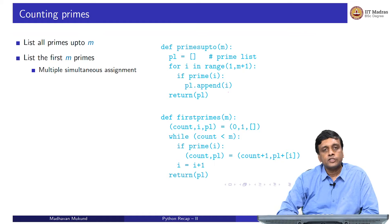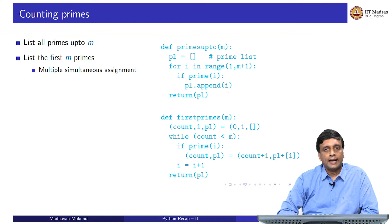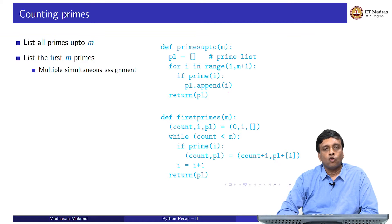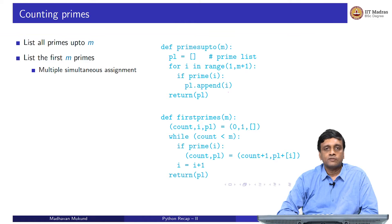Supposing we do not want the list of primes up to a given number m, but we want the first m primes. Primes are infinite but there are gaps. A priori, if we ask for the first 2000 primes, it is not clear how many numbers we should search. So instead of a for loop, we use a while loop and count the primes as we get them, stopping when we reach m.